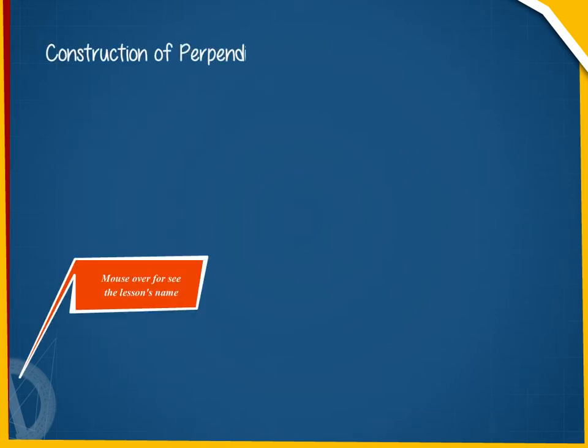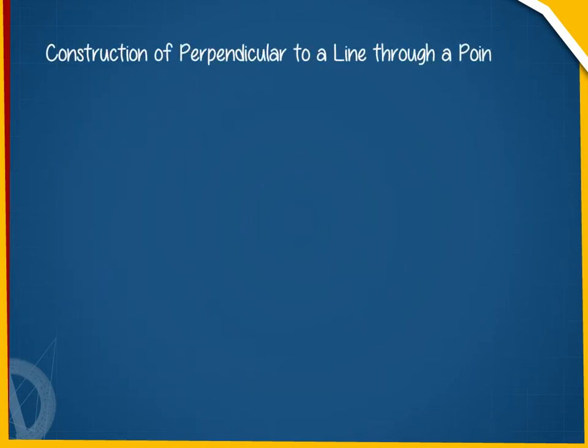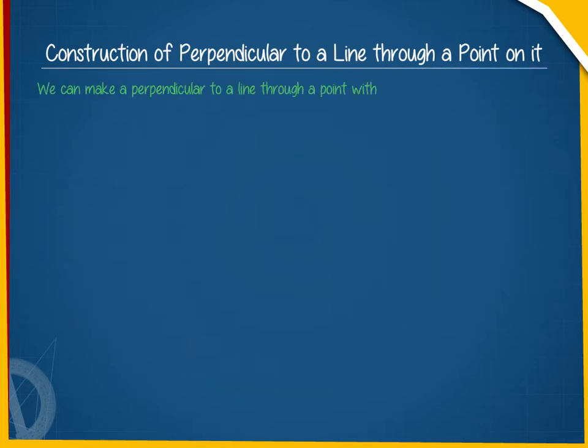Construction of perpendicular to a line through a point on it. We can make a perpendicular to a line through a point with the use of set squares. Let us take a line L and the point O on it.